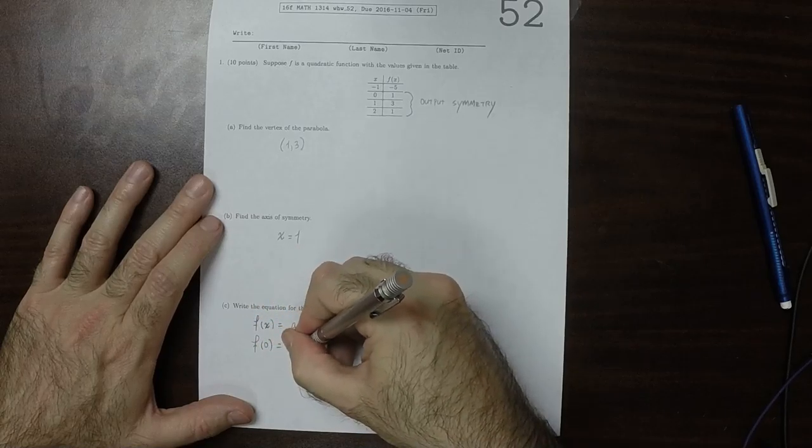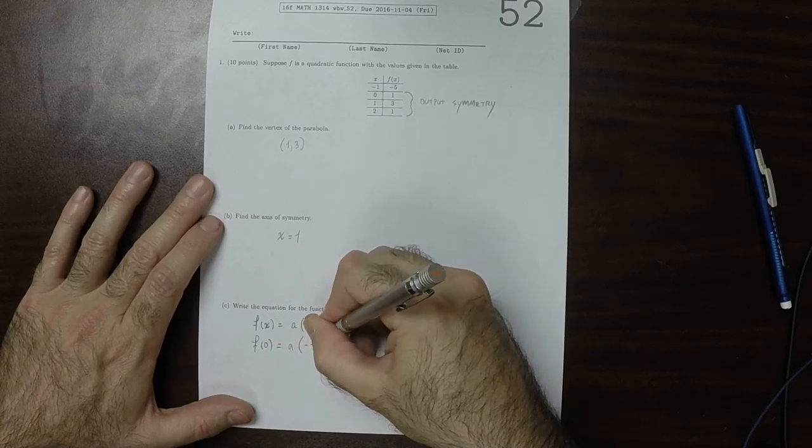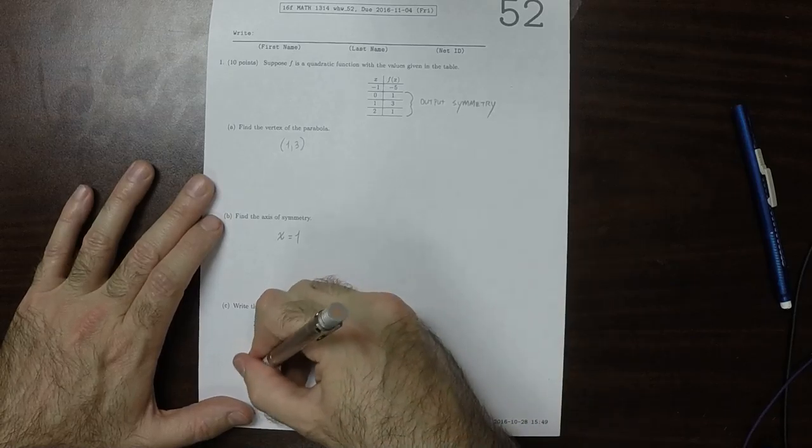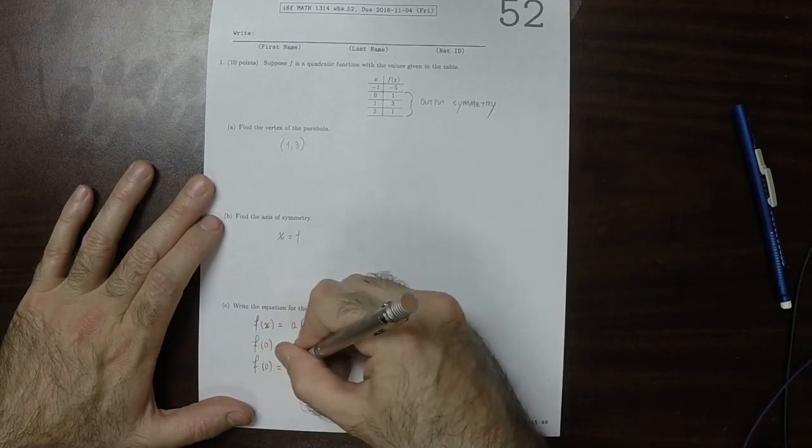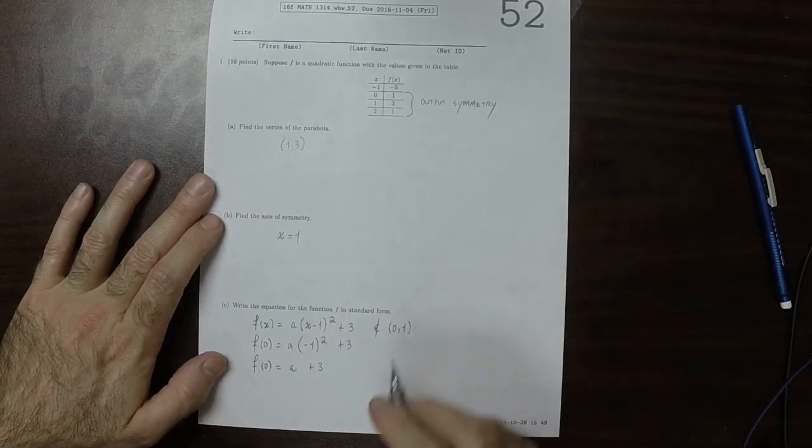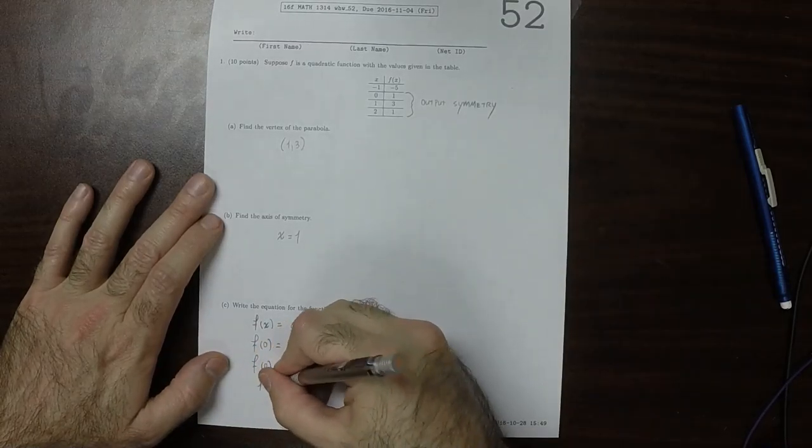Well, that would be a multiplied by negative 1 squared plus 3. So f of 0 is a plus 3. And this is supposed to be 1. So f of 0 is 1.